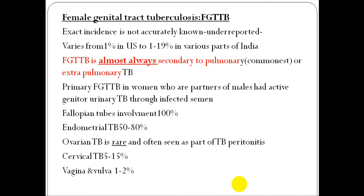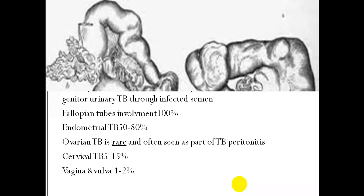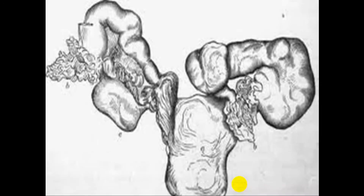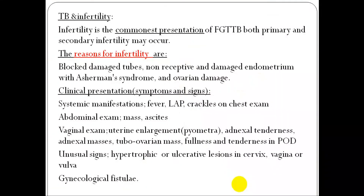Endometrial TB occurs in 50 to 80% of cases. Ovarian TB is rare, and cervical TB is also rare, as is vaginal and vulval involvement. This picture reveals TB extended in a patient with active infection.